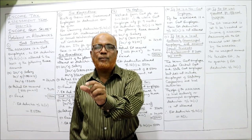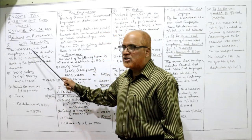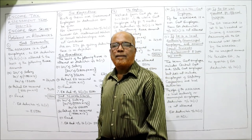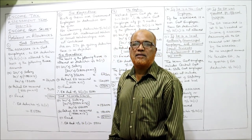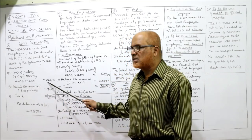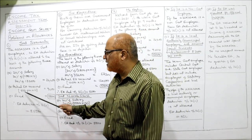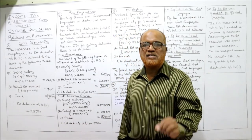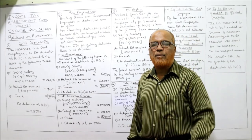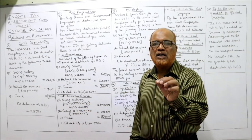Since the assessee is a government employee, EA deduction under Section 16-2 is allowed as the least of the following three amounts. First: 20% of salary — salary is Rs. 11,000 per month, so 11,000 × 12 = Rs. 1,32,000; 20% of 1,32,000 = Rs. 26,400. Second: actual EA received — Rs. 800 per month × 12 = Rs. 9,600. Third: fixed ceiling amount = Rs. 5,000. The least among the three is Rs. 5,000. Therefore, EA deduction allowed under Section 16-2 is Rs. 5,000.